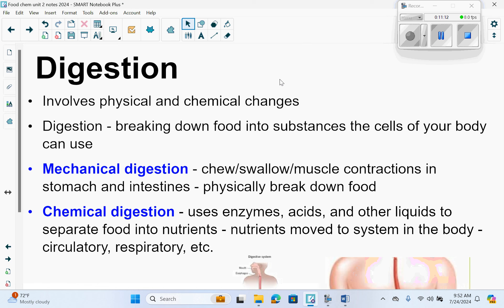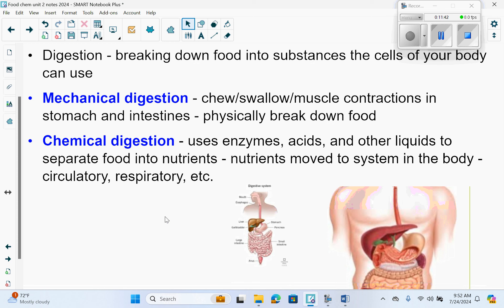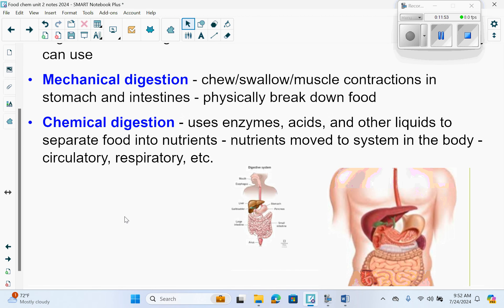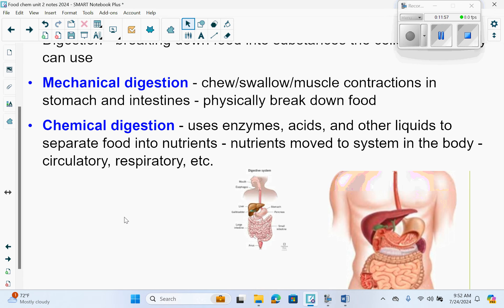Digestion is a combination of both physical and chemical changes. It's breaking down food into substances the cells of your body can use. Mechanical digestion is physically breaking down food—when you chew in the mouth, swallow, and have muscle contractions in your throat, stomach, and intestines. Chemical digestion is when your body uses enzymes, acids, and other liquids to separate food into nutrients. Those nutrients are moved to different systems in the body like the circulatory system (your heart) and respiratory system (your lungs). When nutrients are pulled out of the food and used, they can't go back into the food. So both changes are used in digestion.